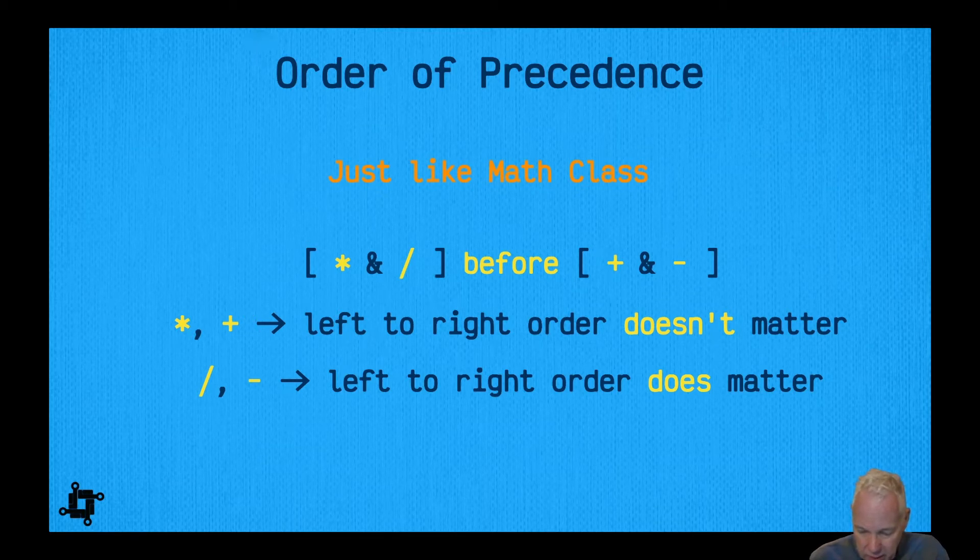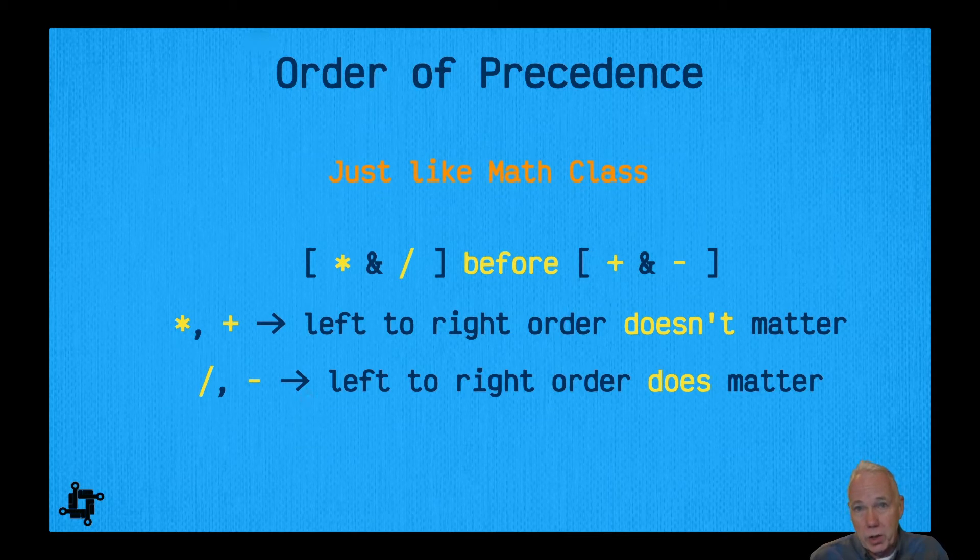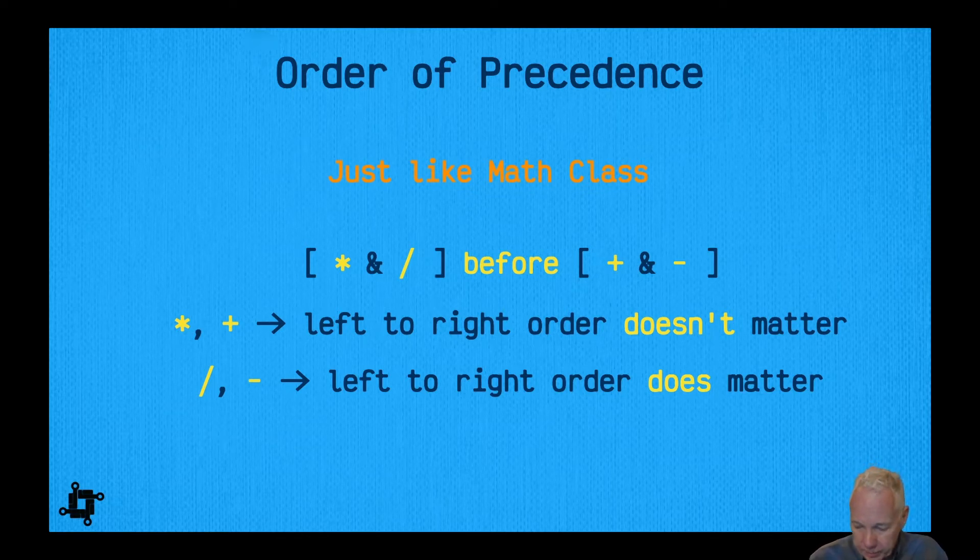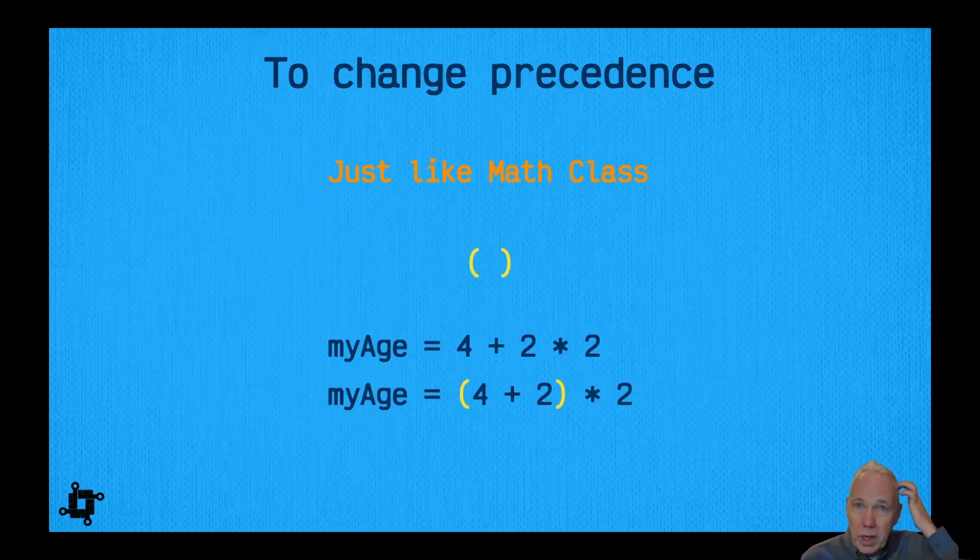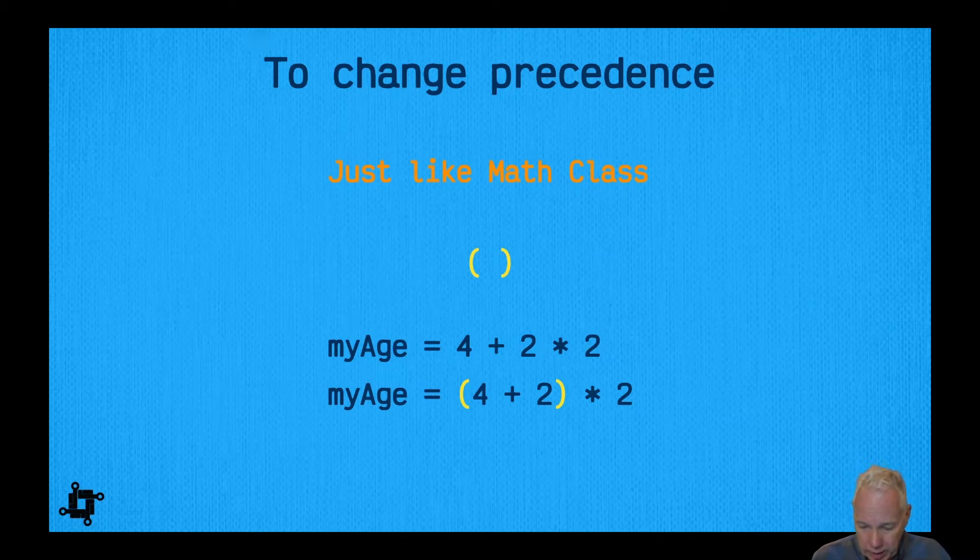For example, multiply and plus are basically the type where it does not matter the order - 3 * 4 is the same as 4 * 3. However, division and subtraction, the order does matter. Just like in math, 4 - 3 is not the same as 3 - 4, so you can't swap them. Then of course, sometimes when you need to create an arithmetic expression, the order of precedence is wrong for what you're trying to do for the calculation, and of course just like in math class, we would use parentheses to do that.